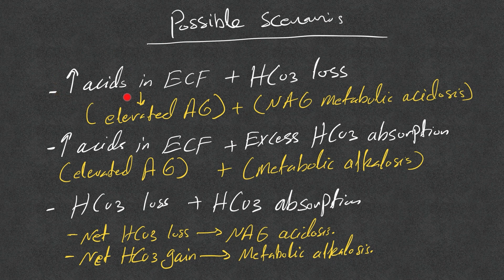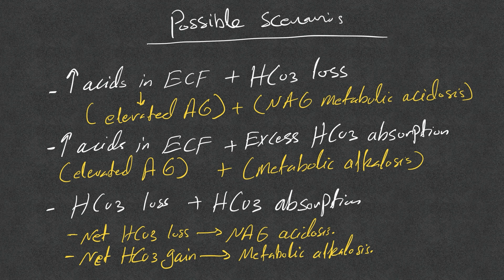There are possible mixed scenarios. A patient may have increased acids in the ECF — elevated anion gap — and bicarb loss through the kidney or GI at the same time — normal anion gap acidosis. Both can coexist. Or you can have elevated anion gap acidosis and metabolic alkalosis simultaneously.